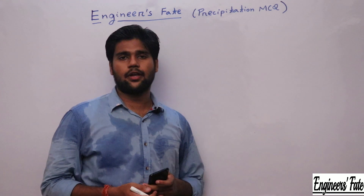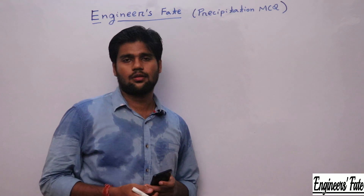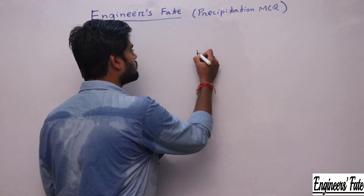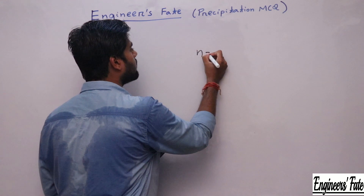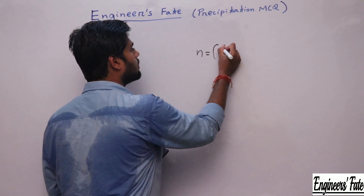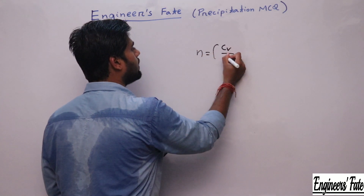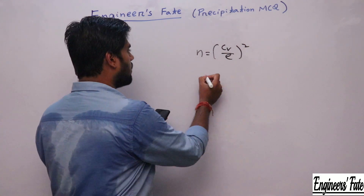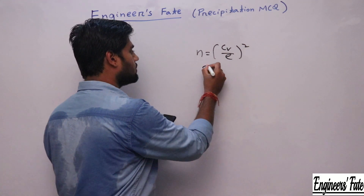The optimum number of rain gauge stations is given by N = (Cv/E)². So the option is option C.